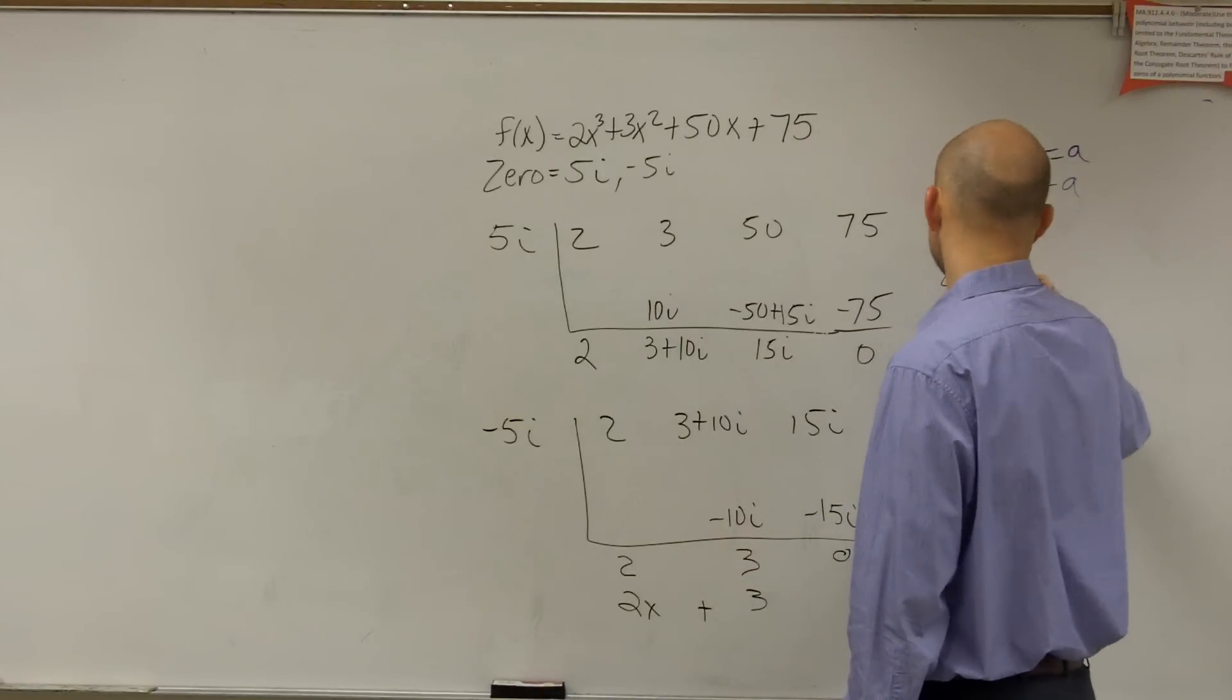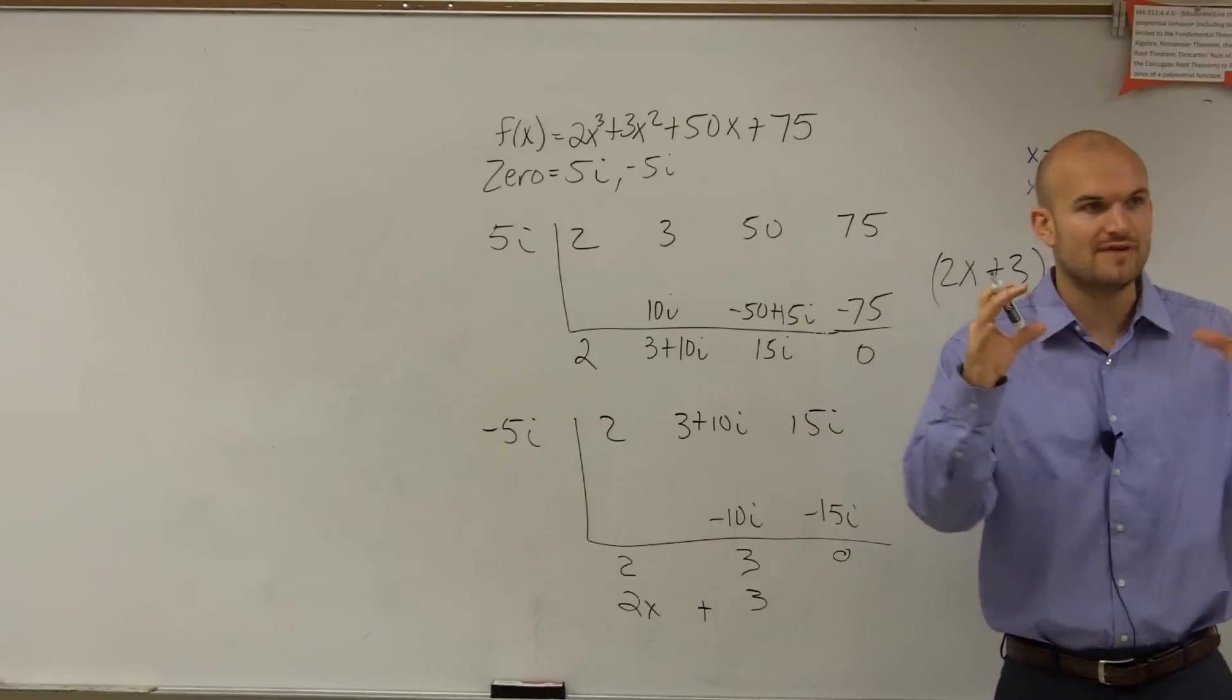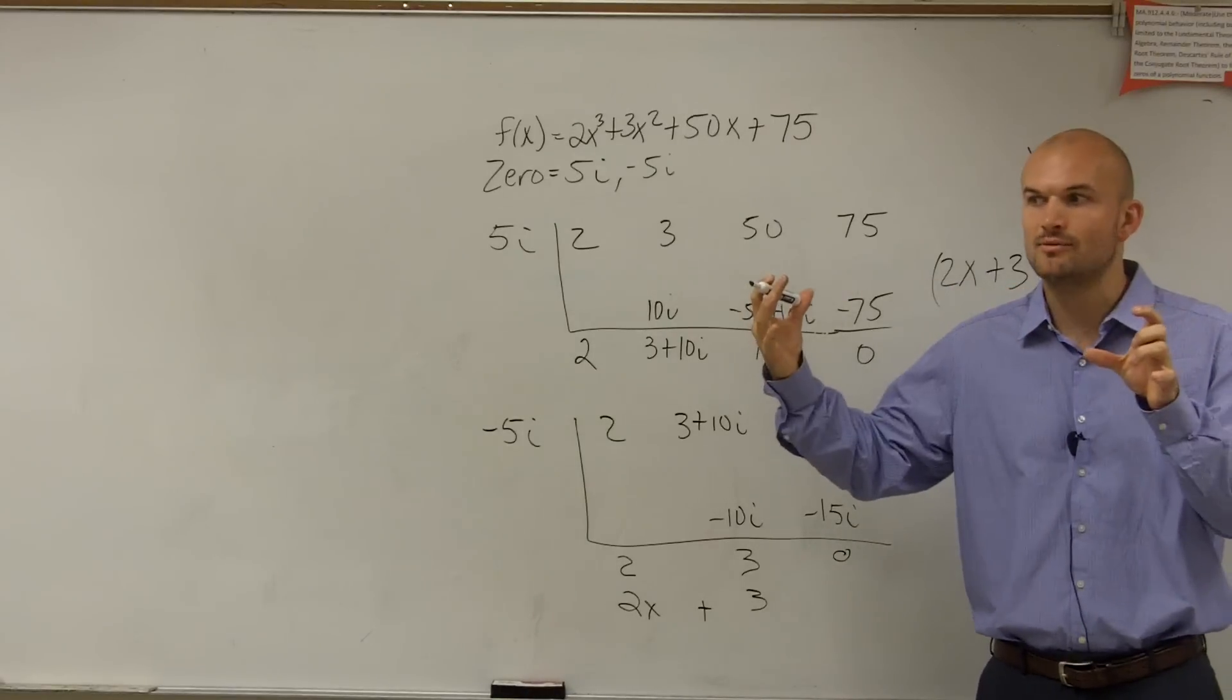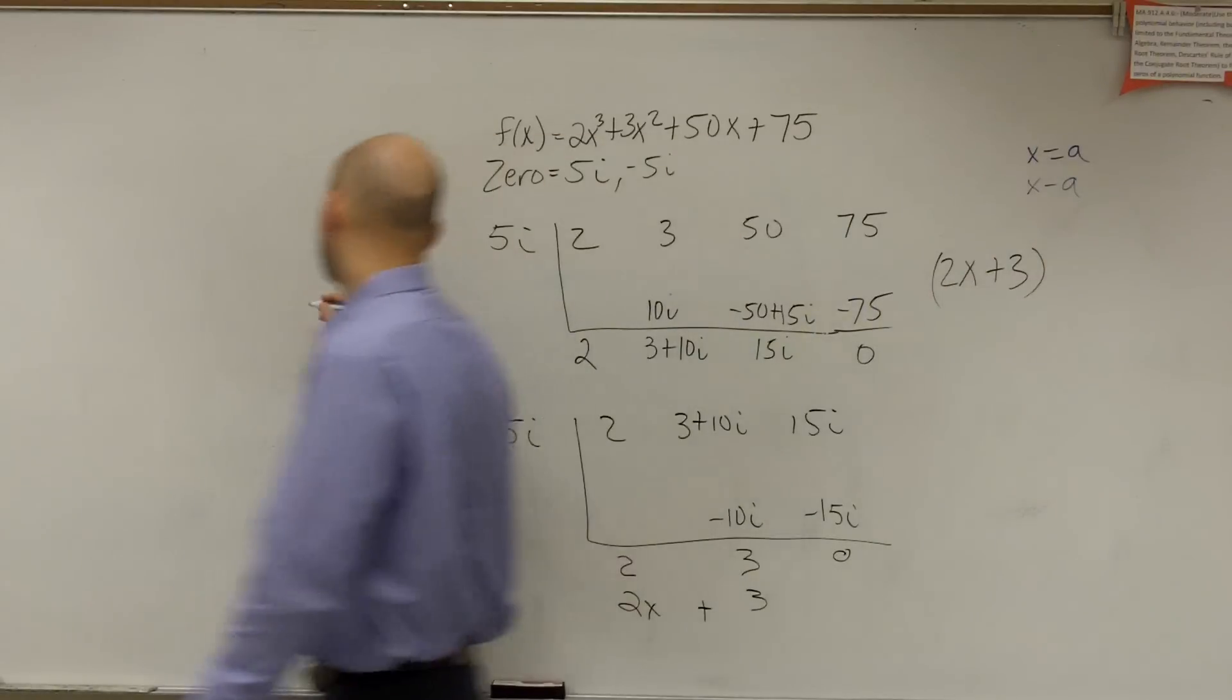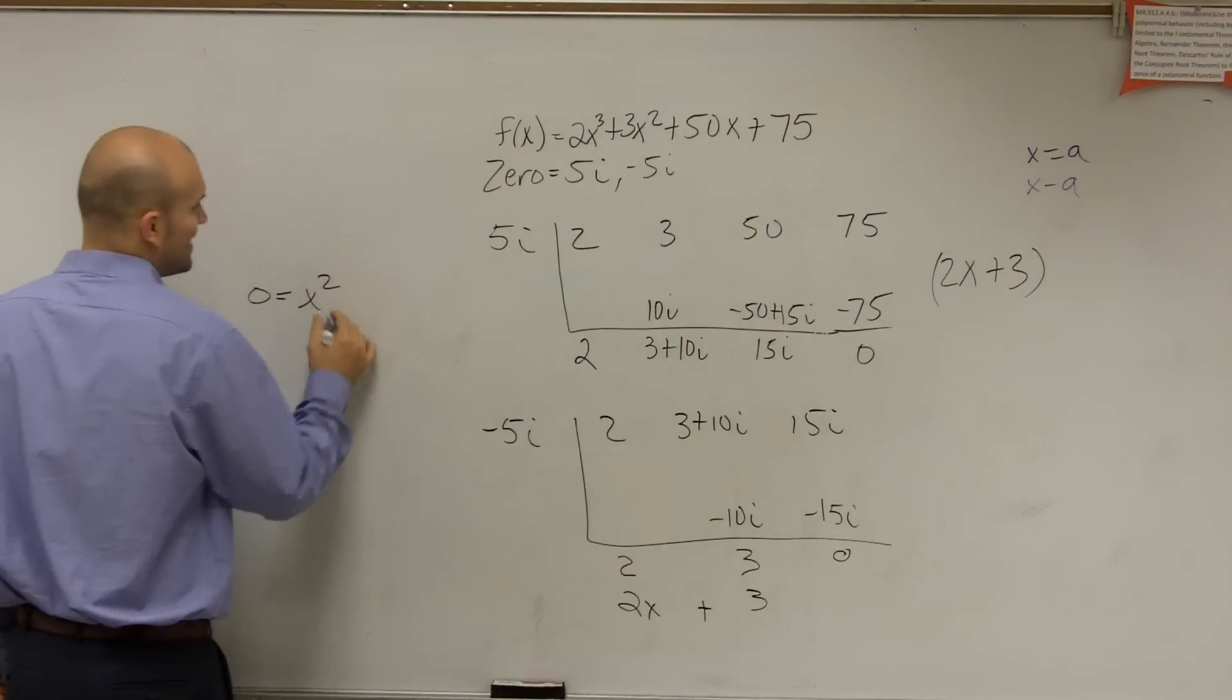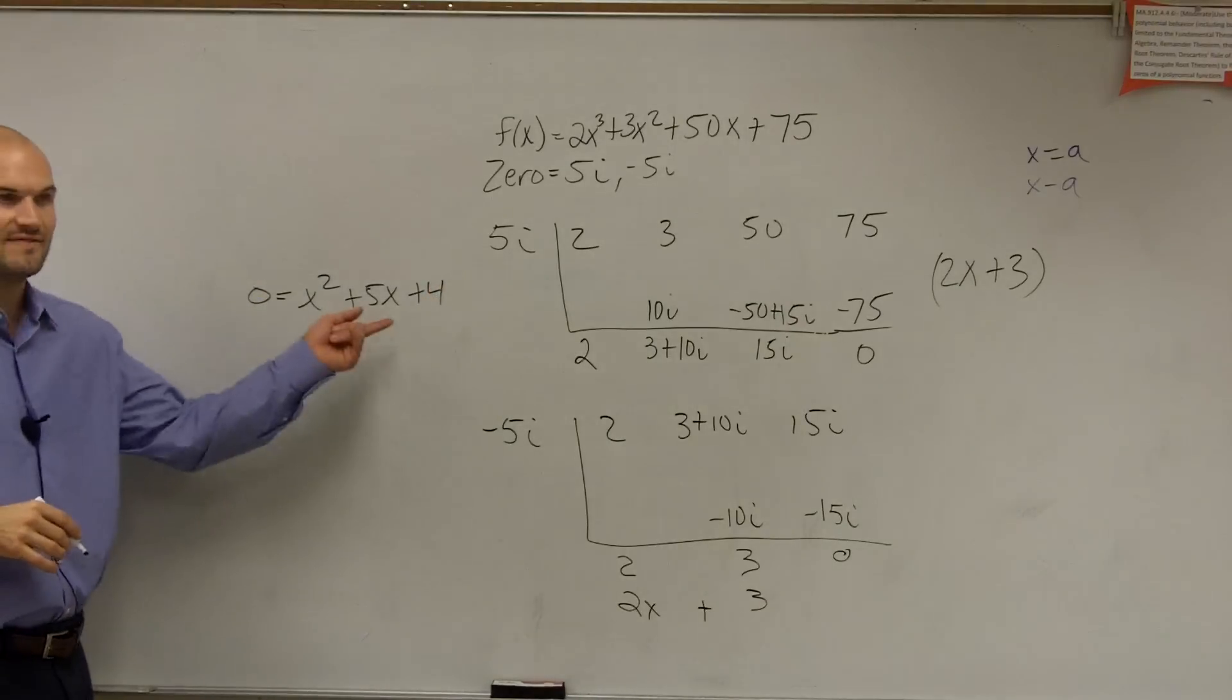And then how do you write this as a zero? Well, remember, if it's a factor, what do we do? Remember when we had two factors multiplied to give you your polynomial? What do we do after that? What do we have to use? If I said find the zeros, right? If I said find the zeros...